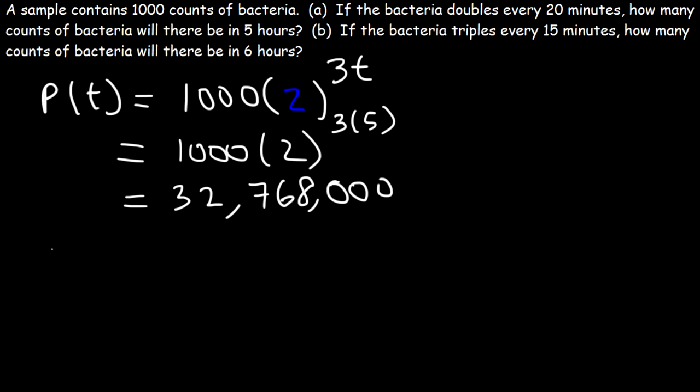Now, what about part B? If the bacteria triples every 15 minutes, how many counts of bacteria will there be in 6 hours? Feel free to try this example. So let's begin. Let's write an equation for the population with respect to T. So the initial population is still 1,000. And this time, the bacteria triples. It triples. So it increases by 3 or by a factor of 3. It triples every 15 minutes. So in terms of minutes, we can write it as T over 15. But in terms of hours, it's different.